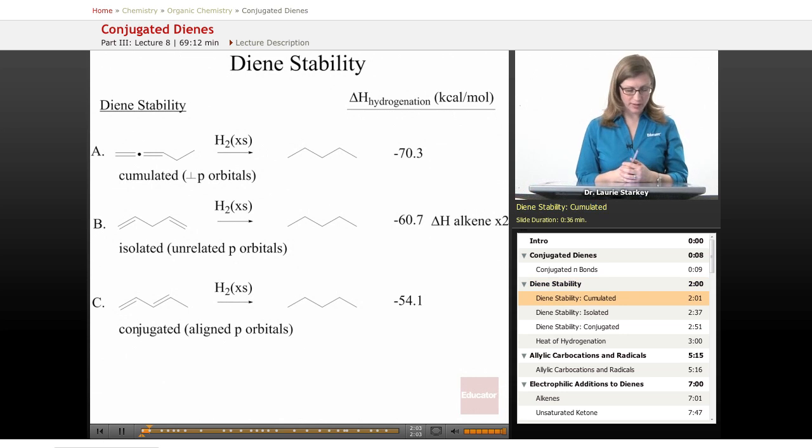Now let's talk about the nature of being conjugated and what kind of stabilization this resonance imparts, and how we can get some evidence for that. Let's take a look at three different types of dienes, one example each.